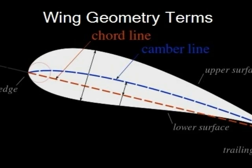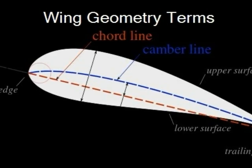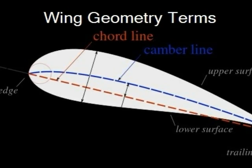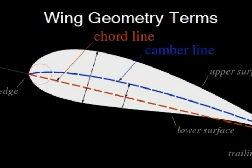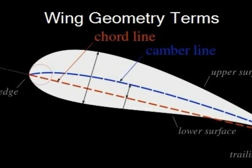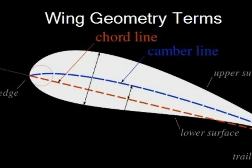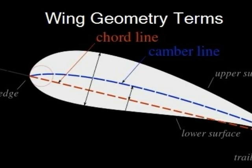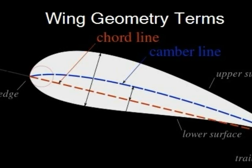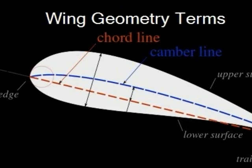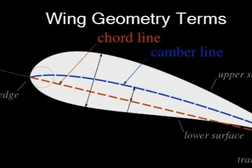Critical to understanding laminar flow wings are wing geometry terms, mainly the chord line. The chord line is the shortest distance between the leading edge of the wing and the trailing edge of the wing.